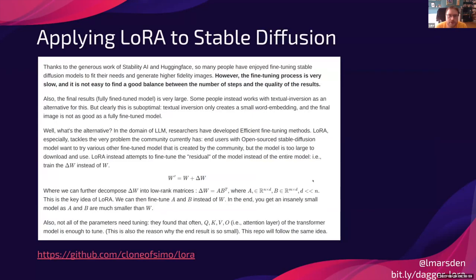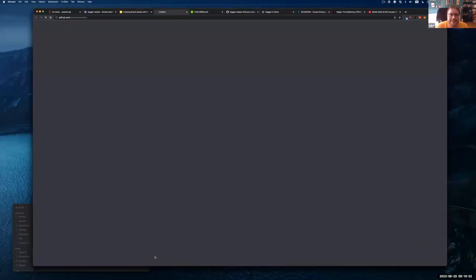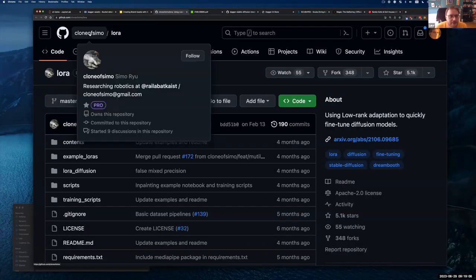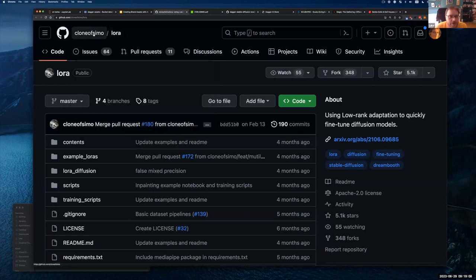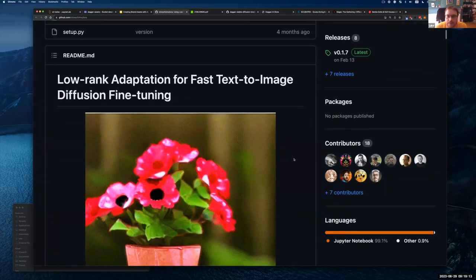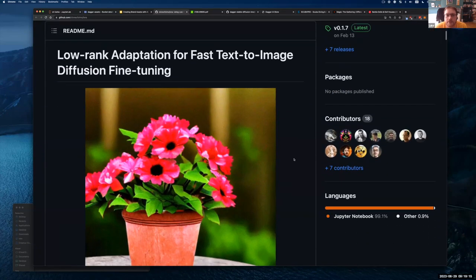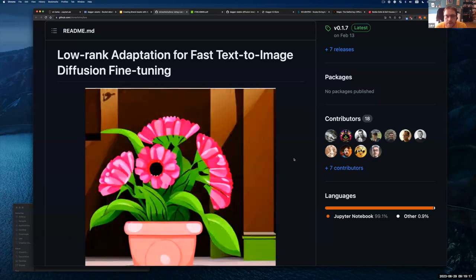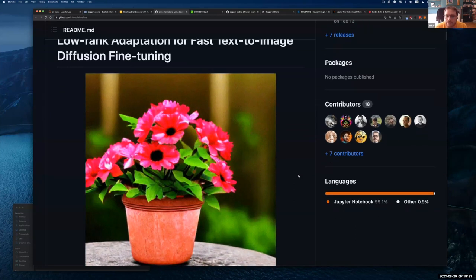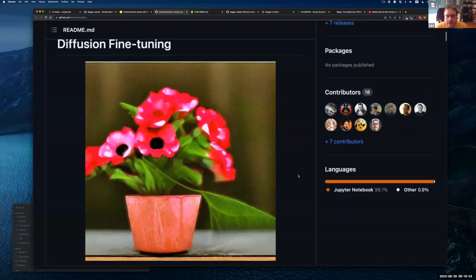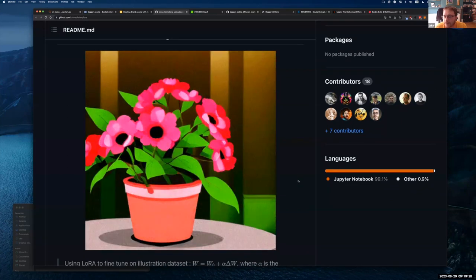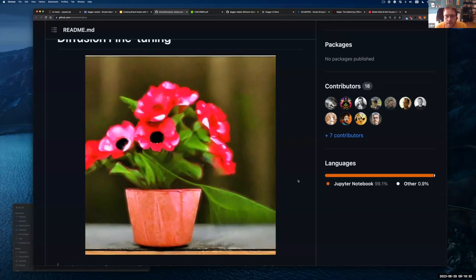So far the LoRa paper just talked about applying this low rank adaptation technique to large language models. And in particular, they use GPT-3 as an example. But there's a very clever person on the internet here, clone of Simo, Simo Ryu, who applied the LoRa technique to text-to-image diffusion models, in particular, stable diffusion.